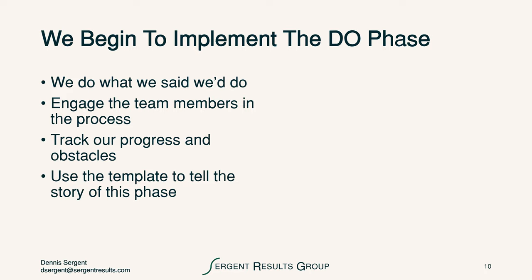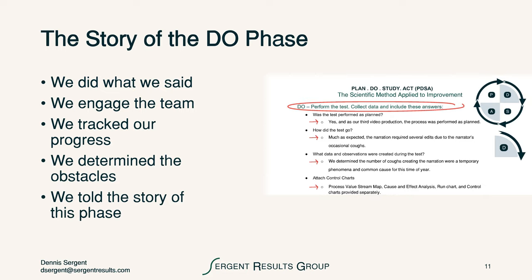Telling the story is how we discipline ourselves to write down what we thought we would do and what we did. The discipline is that when we have the paper records staring us in the face, we don't get to change our mind and say we intended to get what we received. It's an opportunity to stay really focused on what did we think and what did we learn. For the do phase, we simply answer the questions: we did what we said we'd do, engaged the team, tracked our progress, determined the obstacles, and tell this in the story of the do phase.